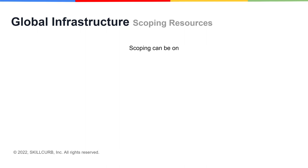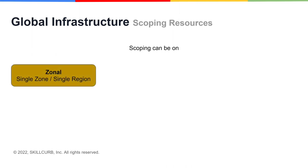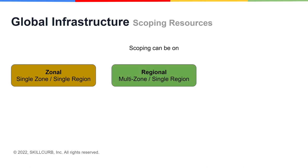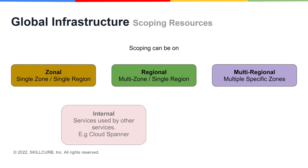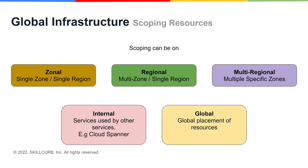Resource scoping is basically how you would want to map your resources within the regions and zones. Scoping can be performed on the following metrics: whether your resource is zonal, meaning it is in a single zone within a single region; or regional, meaning multiple zones within the same region; or multi-regional, meaning multiple zones across multiple regions; or on internal services employed by other GCP services, like Cloud Spanner; and lastly, global resources that reside globally with the whole concept of regions and zones being abstracted.